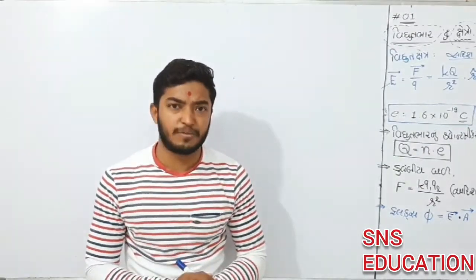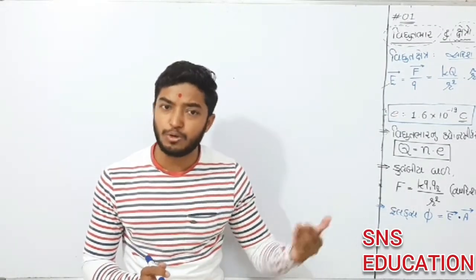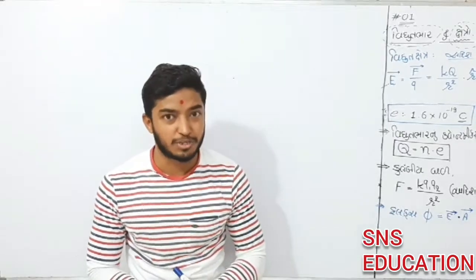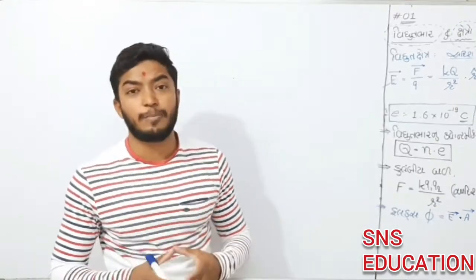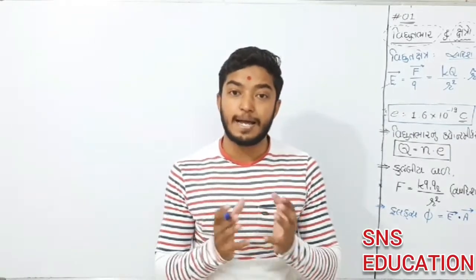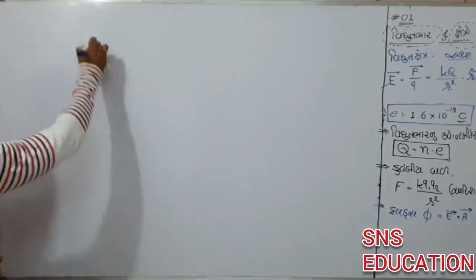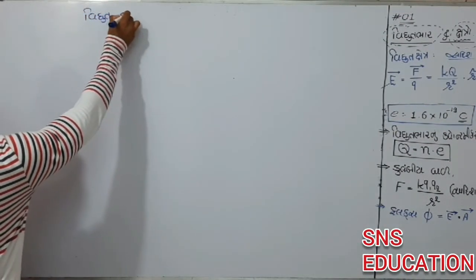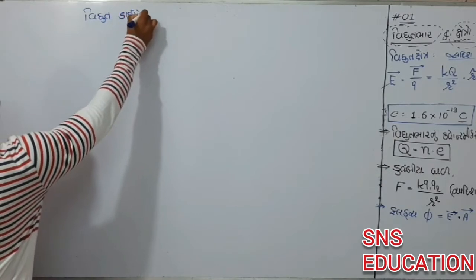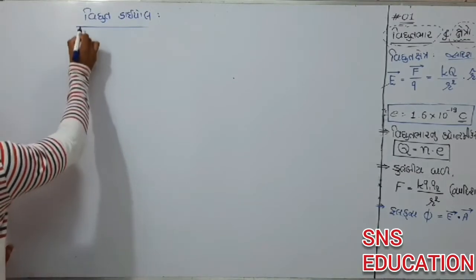So next, the category topic is electric dipole. So now we can take two components. So the topic is electric dipole. This is the concept of electric dipole.